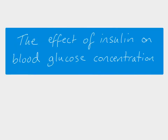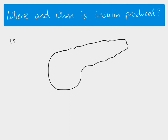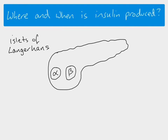In this video we're looking at the effect of the hormone insulin. Insulin is produced in the pancreas, and throughout the whole pancreas there is tissue called the islets of Langerhans. Within the islets of Langerhans there are two kinds of cells: alpha cells and beta cells.